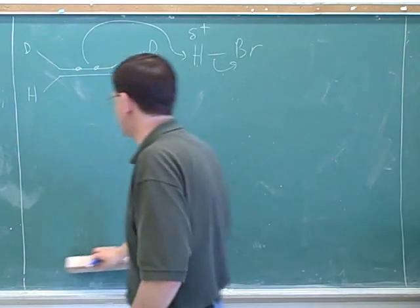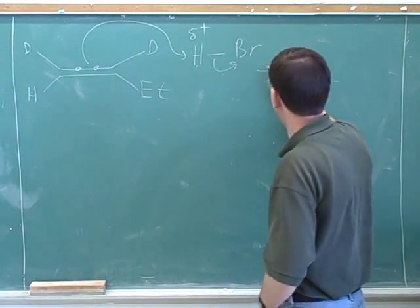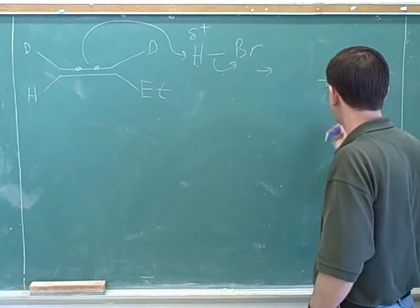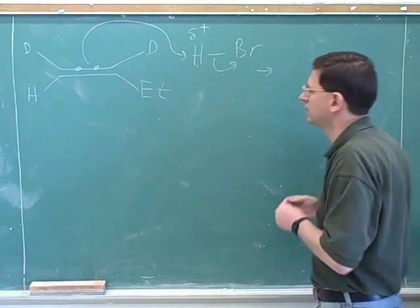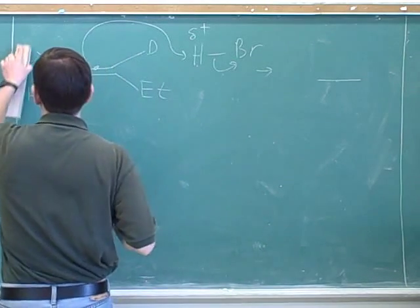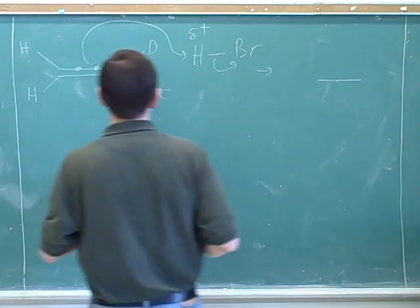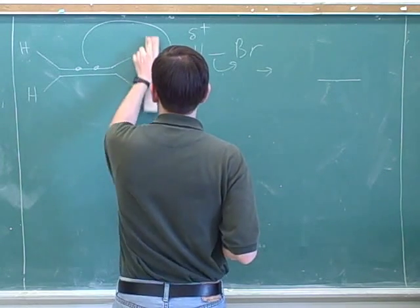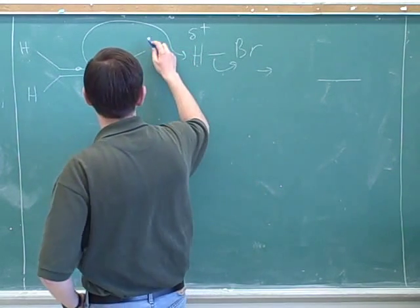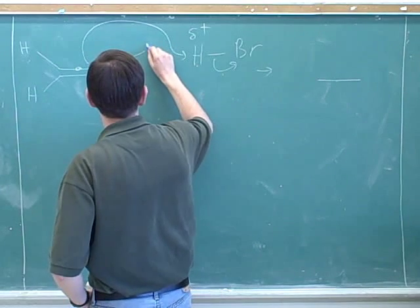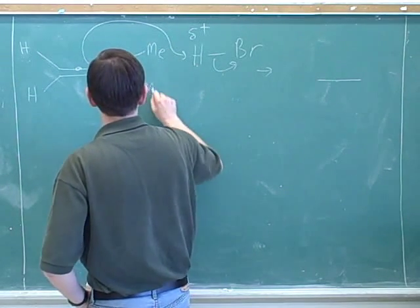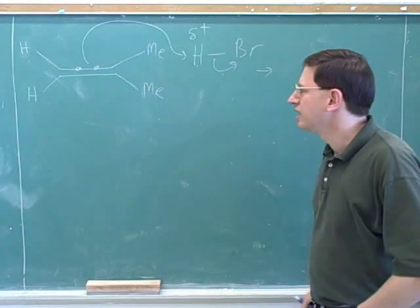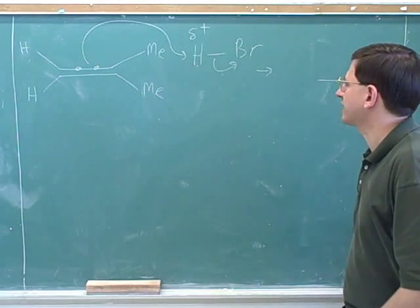So now I'm going to go ahead and draw the product from this. Now there's some complications here. It's going to attach to the less substituted so there's a carbocation in the more stable one. Let me change the original molecule and make something simpler here. So we'll attack here.